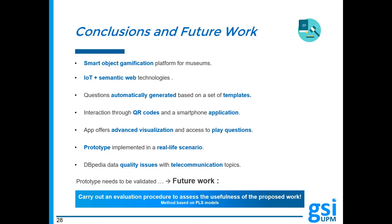To sum up the presentation, we will encapsulate the main ideas conveyed. A smart object gamification platform for museums has been introduced, which is based on Internet of Things and semantic web technologies. Questions for the quiz game are automatically generated based on a set of templates. Visitors can interact with the platform through QR codes and the smartphone app, which offers advanced visualization and access to play questions. We have also addressed the implementation of a prototype in a telecommunications museum. During the adaptation of the platform to the telecom museum, we identified DBpedia data quality issues with the telecommunications topics, which has reduced the number of possible questions that could be produced.